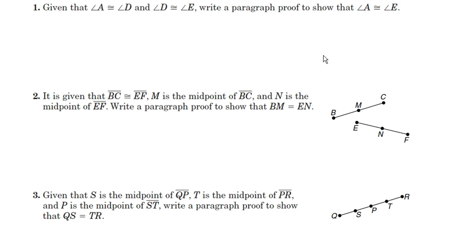Since angle A is congruent to angle D, and angle D is congruent to angle E, then the measure of angle A is equal to the measure of angle D, and the measure of angle D is equal to the measure of angle E. Then that is from the definition of congruence.